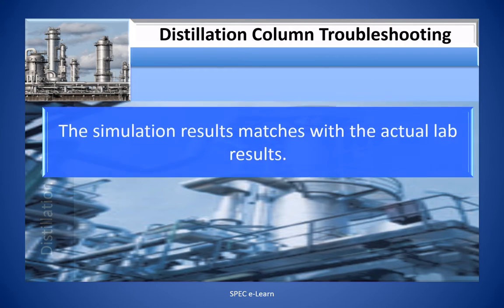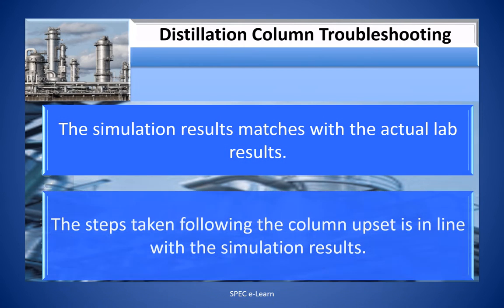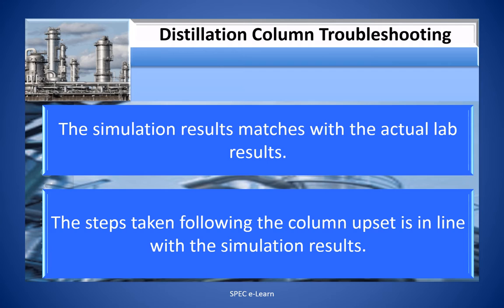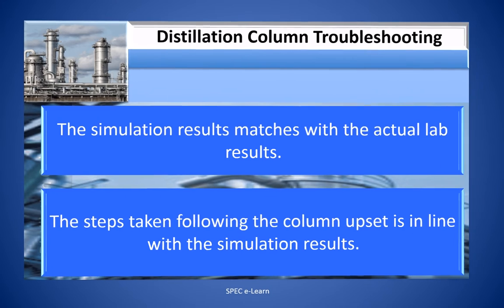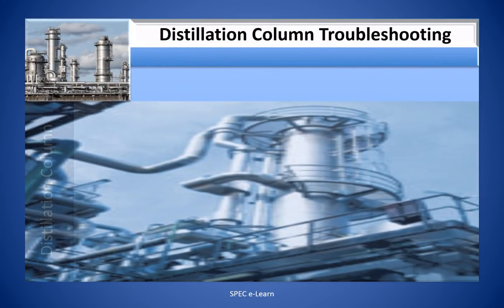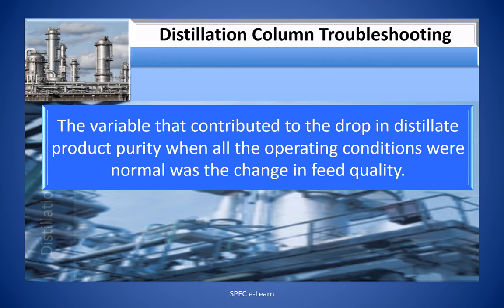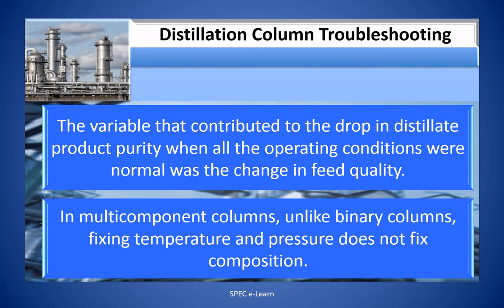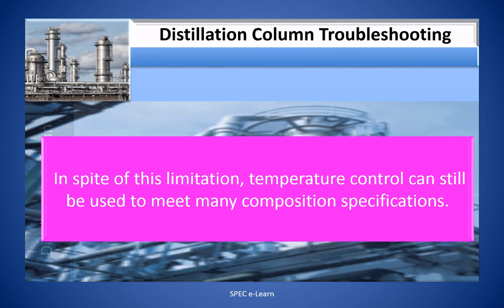The simulation results match the actual lab results. The steps taken following the column upset are in line with the simulation results. The variable that contributed to the drop in distillate product purity — when all operating conditions were normal — was a change in feed quality. In multicomponent distillation columns, unlike binary columns, fixing temperature and pressure does not fix the composition. In spite of this limitation, temperature control can still be used to meet many composition specifications.